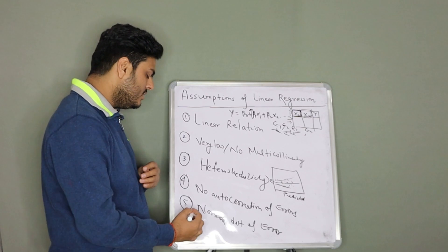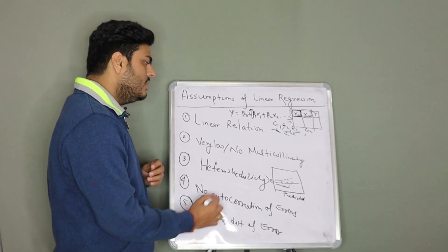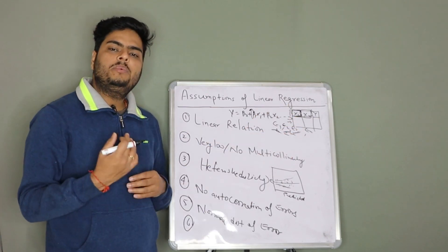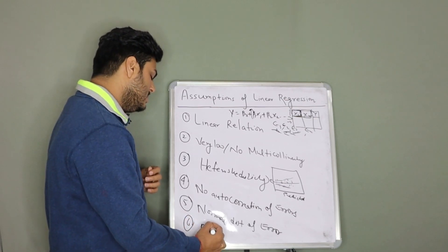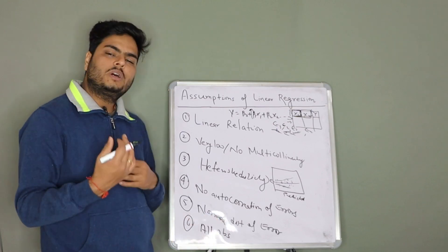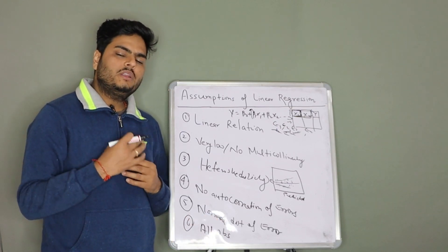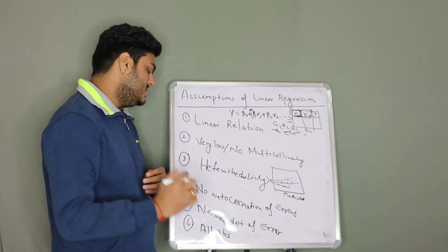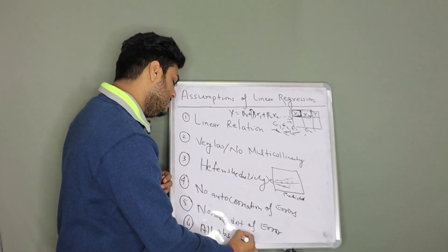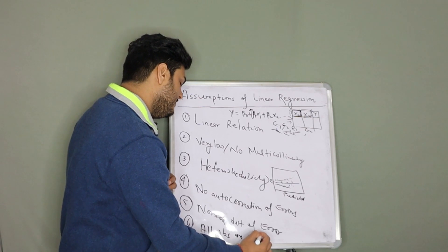There is another assumption that you should be aware of, that is nothing but all the observations are independent of each other. This assumption is also good for other models as well, but in linear regression also you can say all your observations should be independent of each other.